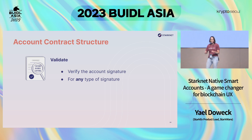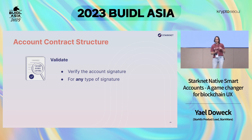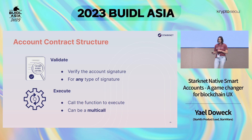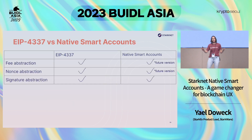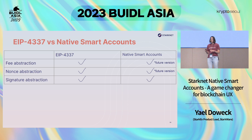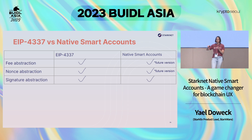The account contract structure has two main functions. It has the validate function — very similar to Ethereum's EIP approach — which verifies the account signature, and this can be any type of signature. And it has the execute function, which executes the operation the user wanted, and can also be a multi-call. Comparing the two solutions: all three features — fee abstraction, nonce abstraction, and signature abstraction — are supported by both EIP-4337 and StarkNet. As a side note, on StarkNet we haven't implemented fee abstraction yet, but it will be available in future versions.